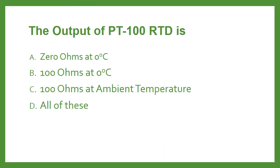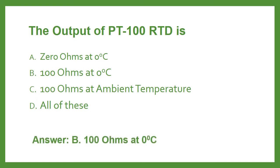The output of PT100 RTD is: Option A 0 ohms at 0°C, Option B 100 ohms at 0°C, Option C 100 ohms at ambient temperature, or Option D All of these. The answer is Option B: 100 ohms at 0°C.